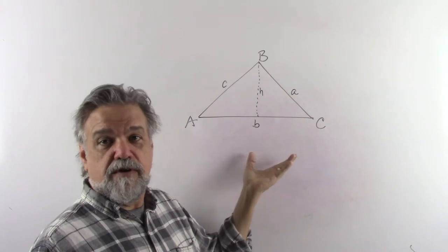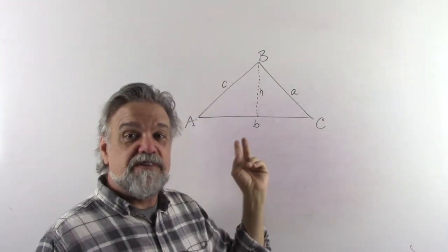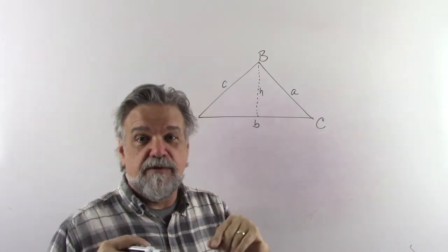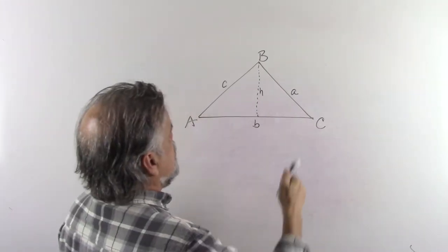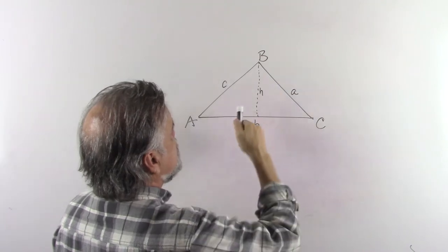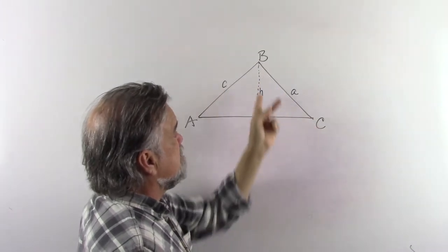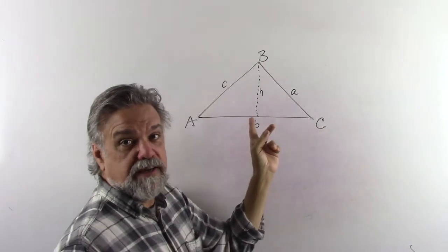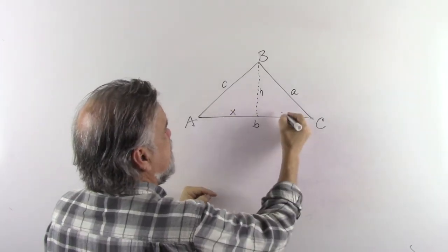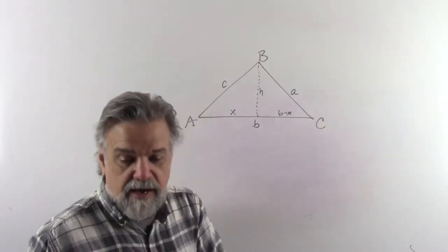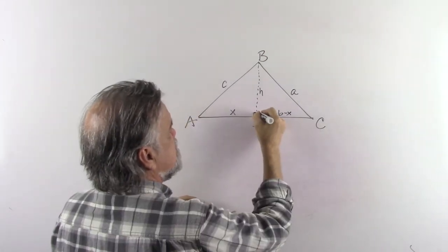So here we have a triangle. In case you're wondering if this is a right angle at the top, it's not supposed to be. What I want it to be is an obtuse triangle, because I'm going to rotate it later and show you something. But for right now, let's just say these angles can be anything. We labeled the angles and the sides as always: side A is opposite angle A, side C is opposite angle C, side B is opposite angle B. I drew an altitude in for the height, and let's label this X here and label this B minus X right there.